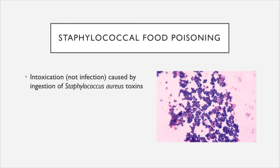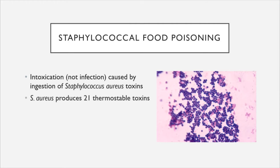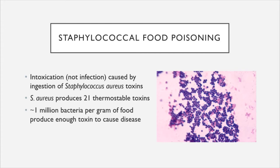Staphylococcus aureus consists of gram-positive, spherical-shaped cells arranged in clusters. It produces 21 different thermostable toxins — meaning toxins that can withstand high levels of heat and not break down. It takes approximately 1 million bacteria per gram of food to generate enough toxin to cause an actual disease state. Typically, staphylococcal food poisoning is mild and self-limiting within 24 to 48 hours.